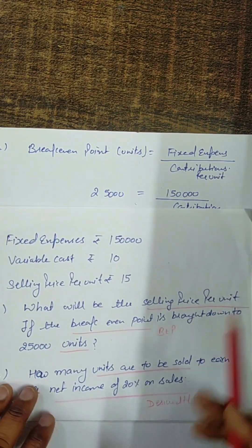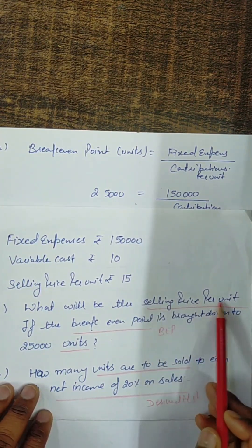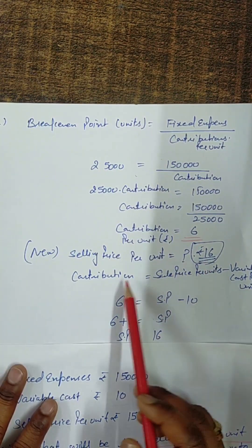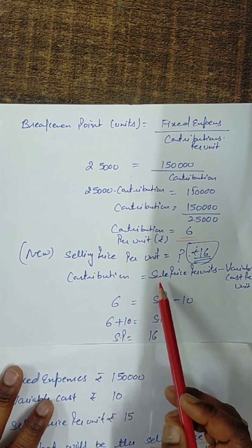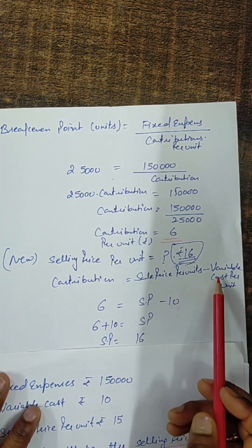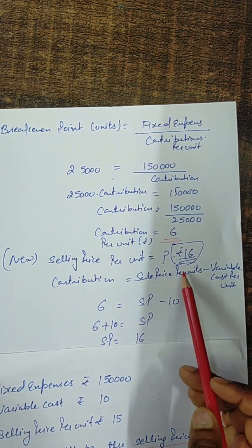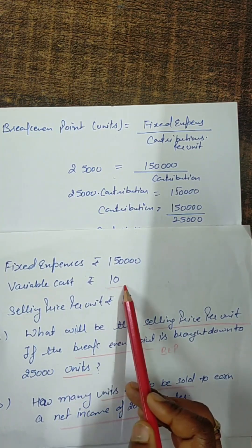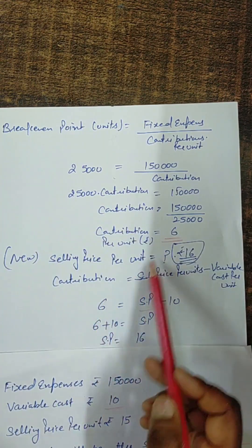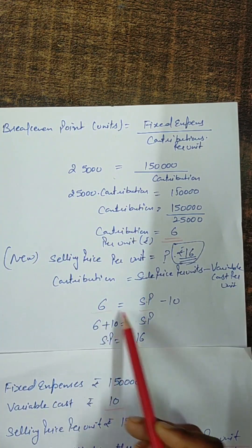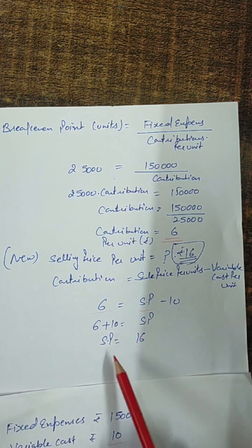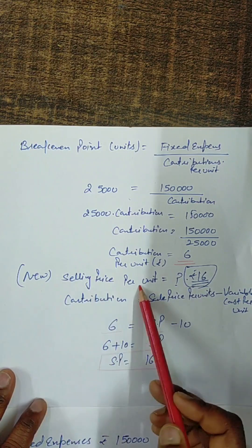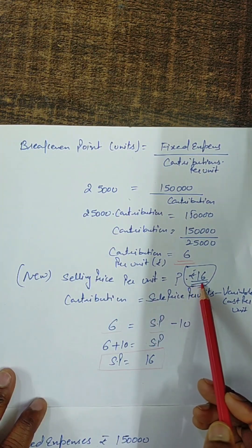In the question we are asked to find the selling price per unit. With the contribution per unit known, we can easily find it using the formula: Contribution = Selling price per unit minus variable cost per unit. Variable cost is ₹10, contribution is ₹6, so the new selling price per unit is ₹16.